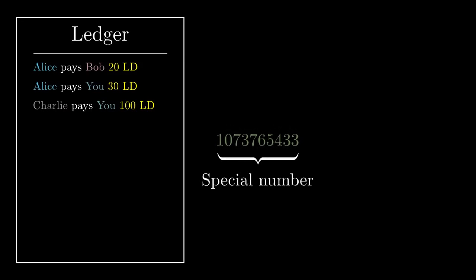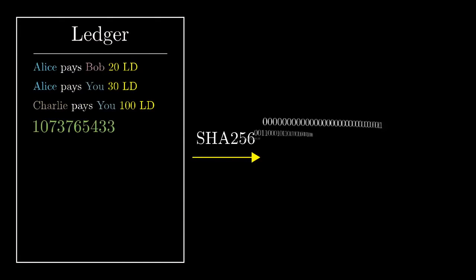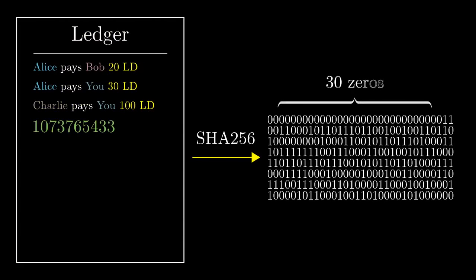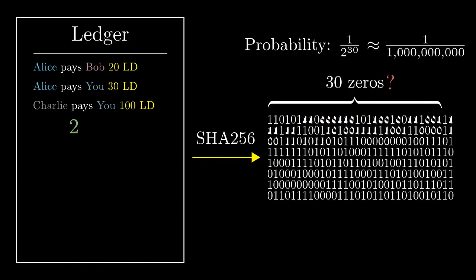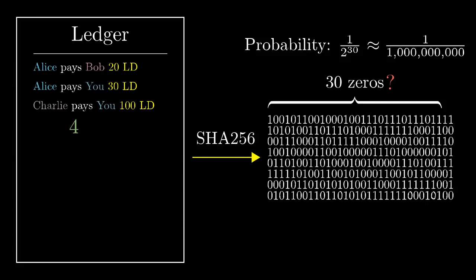Imagine someone shows you a list of transactions and they say, hey, I found a special number so that when you put that number at the end of this list of transactions and apply SHA-256 to the entire thing, the first 30 bits of that output are all zeros. How hard do you think it was for them to find that number? Well, for a random message, the probability that a hash happens to start with 30 successive zeros is 1 in 2 to the 30, which is about 1 in a billion. And because SHA-256 is a cryptographic hash function, the only way to find a special number like that is just guessing and checking.